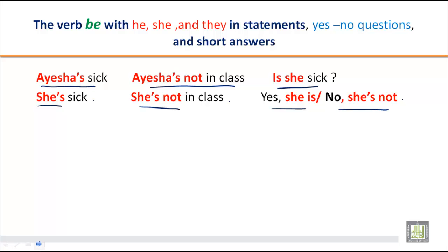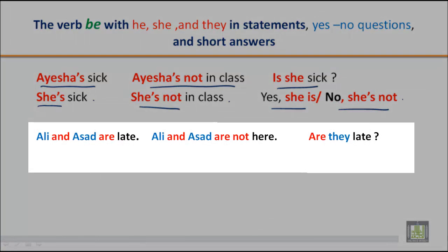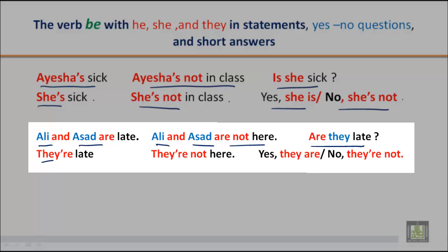Now let's practice about 'they'. When there is more than one person we use 'they'. For example: Ali and Asad are late. Ali and Asad are not here. If we have to ask a question: Are they late? Instead of repeating Ali and Asad, we say they are late. They are not here. And for the question: Are they late? Yes, they are. No, they are not.